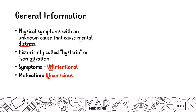Remember in our previous video we talked about malingering and factitious disorder? Well, in malingering, the symptoms were intentional and motivation was conscious. In factitious disorder, the symptoms were still intentional but the motivation was unconscious. And in somatic disorders, both symptoms and motivation are unintentional and unconscious. That's very important — it is one key difference between malingering, factitious disorder, and somatic symptom disorders.